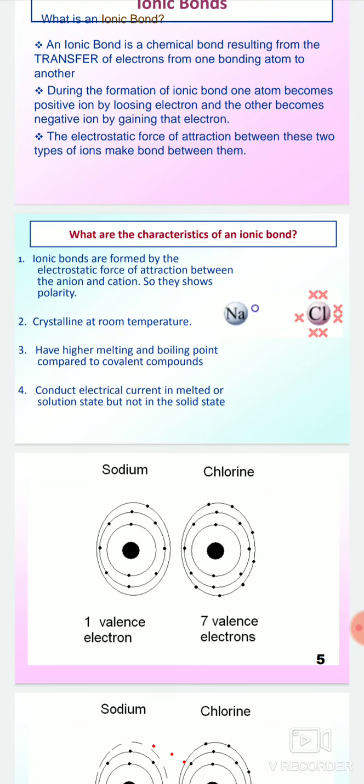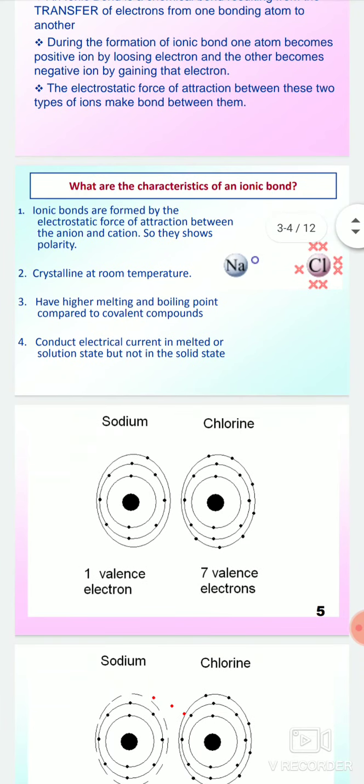What are the characteristics of ionic bonds? Ionic bonds form crystals at room temperature, have higher melting and boiling points, and conduct electrical current in melted or solution state but not in solid state.